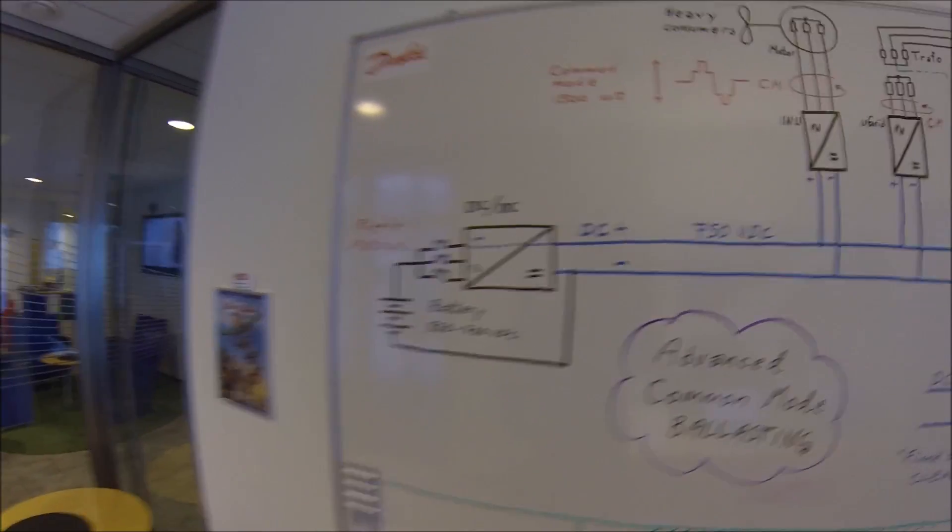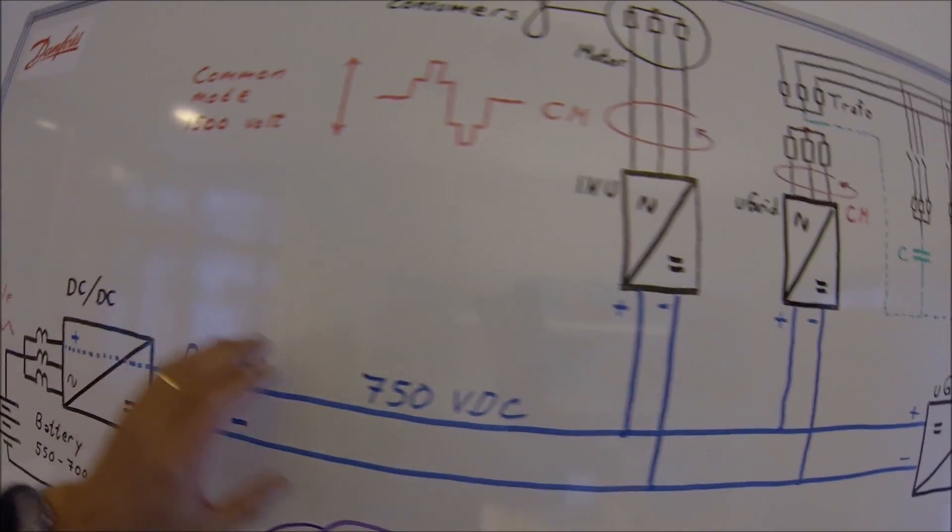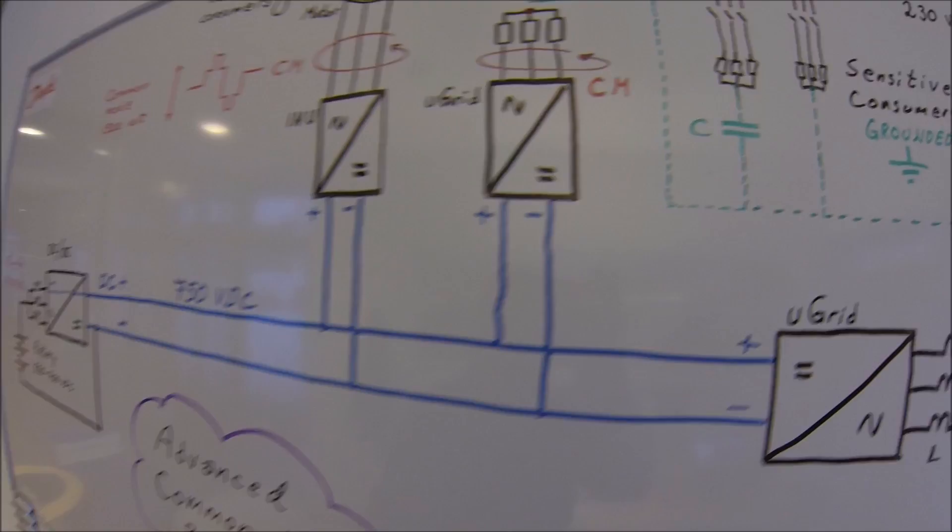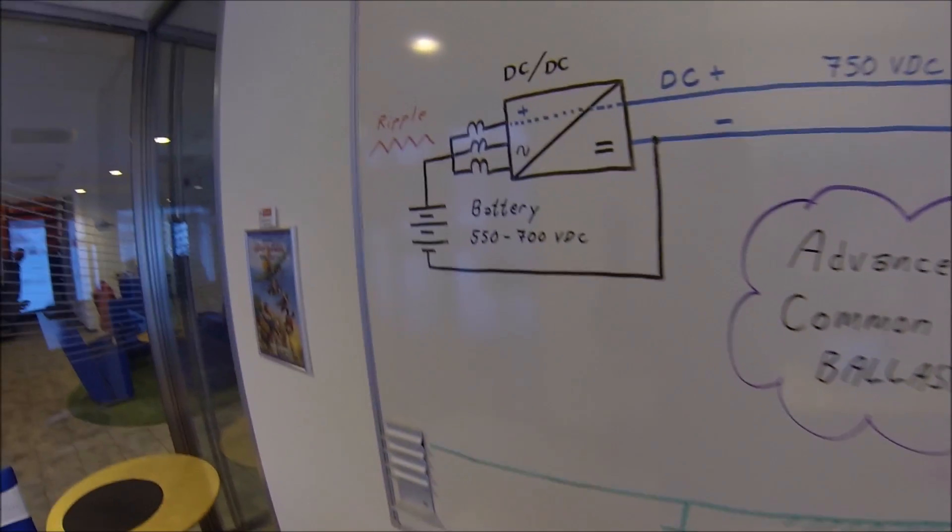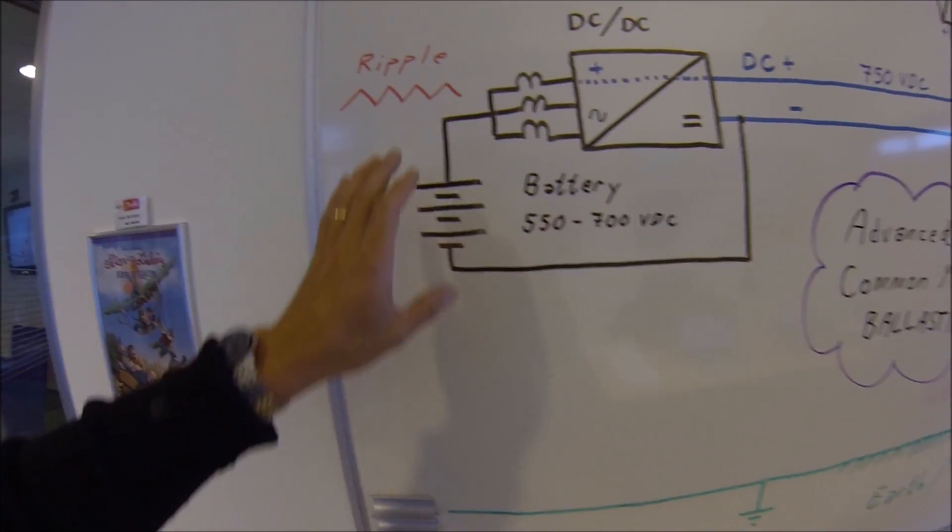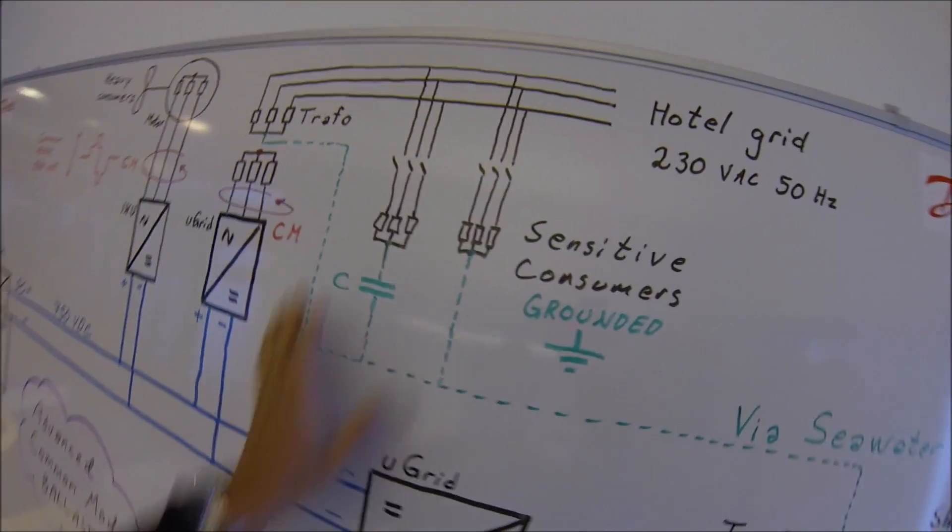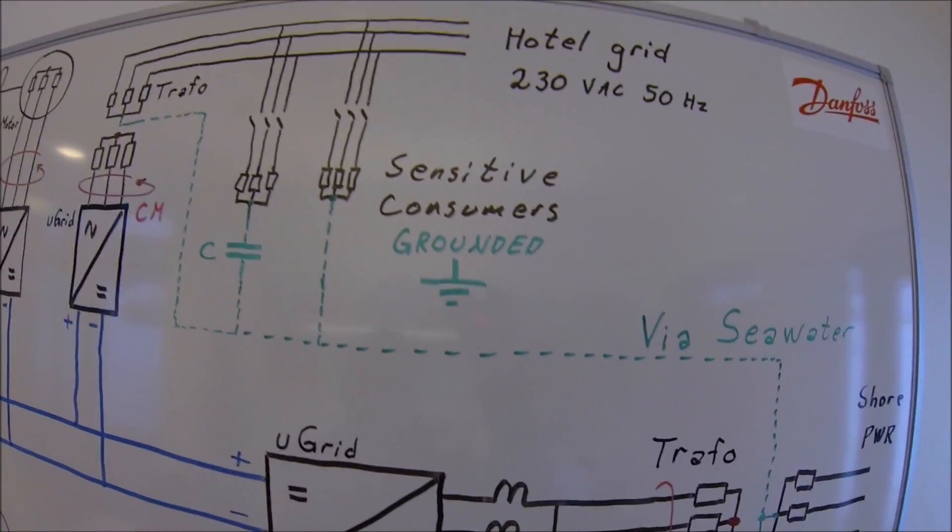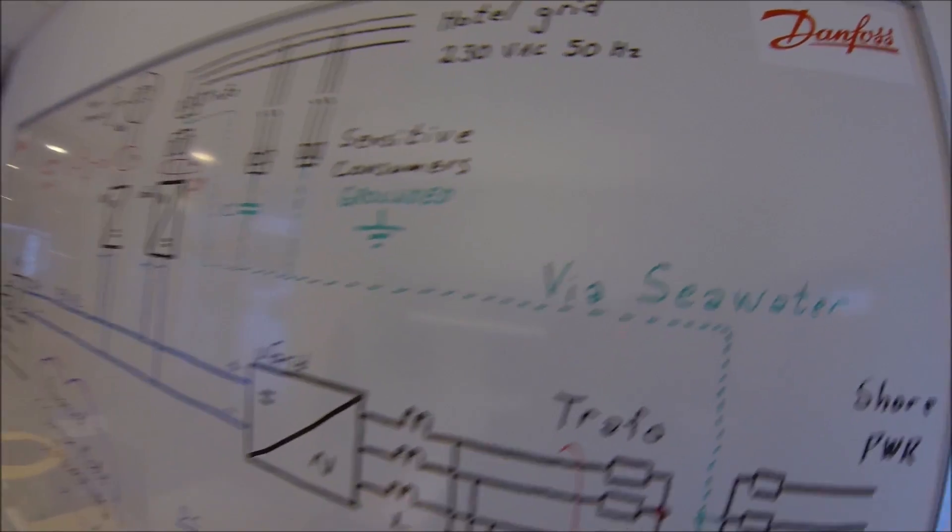In hybrid ships, the common mode from frequency converters needs to be handled in some way so that we don't disturb the battery management systems. We can have sensitive consumers on the hotel and navigation side of the ship.